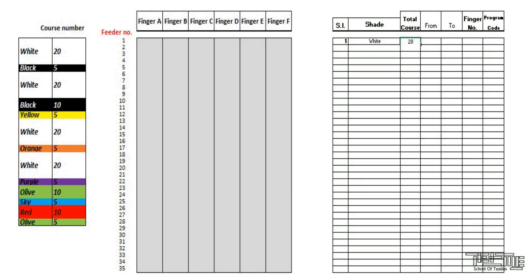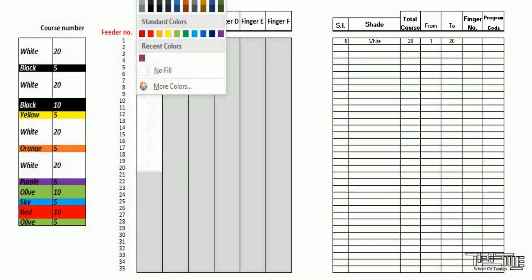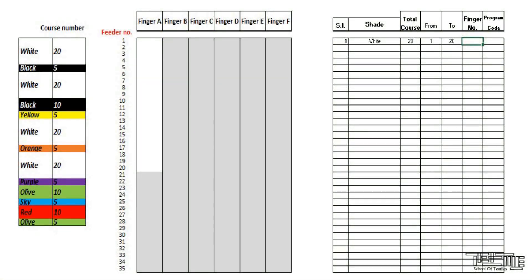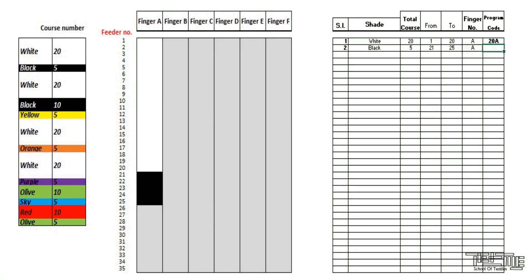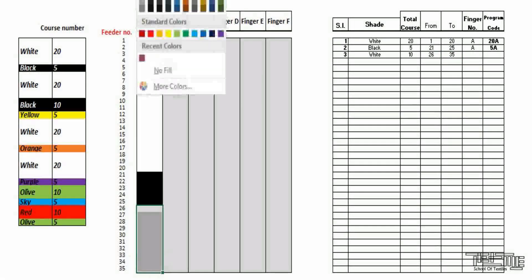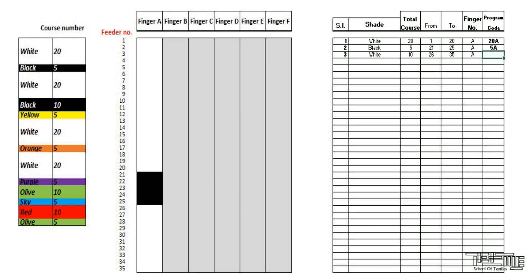As calculated, 35 feeders are used. First, 20 white-color courses are required, so finger A of the first 20 feeders (feeders 1 to 20) are used — program code: 20A. From feeders 21 to 25, black yarn is given to finger A — program code: 5A. Next, 20 white courses are needed but only 10 feeders remain, so white yarn is given to finger A of feeders 26 to 35. The remaining 10 white courses go to feeders 1 to 10, but since white yarn is already in finger A there, no new finger is needed.